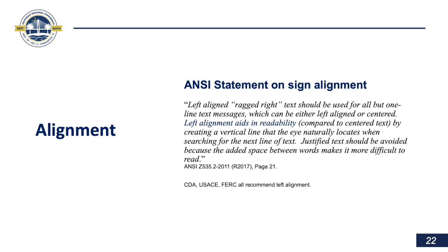Just as a sign set in all-caps takes more time to read, the same goes for alignment. You do not want to use center alignment. You always want to use left-aligned, or what's called ragged right text — this is an ANSI standard. Left-aligning a sign aids readability because the eye naturally looks for a vertical line, which helps it comprehend the sign quicker. So the individual viewing it will have a much easier time comprehending it and getting through the sign faster.